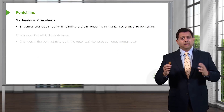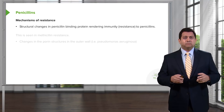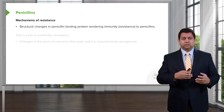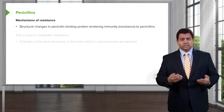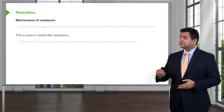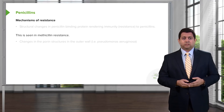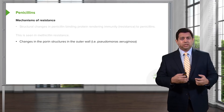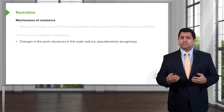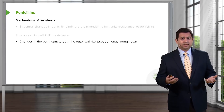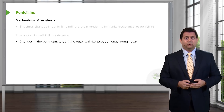There are other mechanisms of resistance that bacteria will have against penicillin. Sometimes there's a structural change in the penicillin-binding protein, which renders resistance to penicillins. This is actually the mechanism of methicillin resistance, and it's become a real problem in our hospitals. Sometimes there's a change in the porin structure of the outer wall — the resistance of Pseudomonas to penicillins is a great example, as the penicillin isn't able to penetrate.